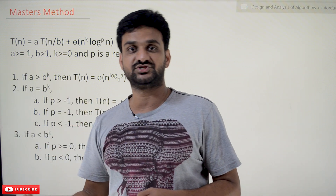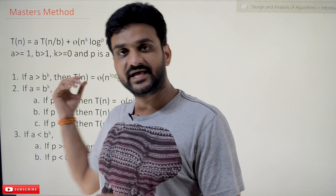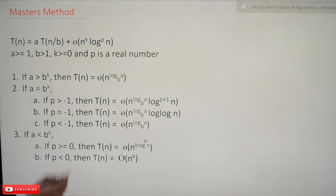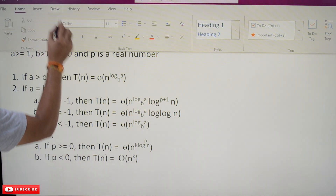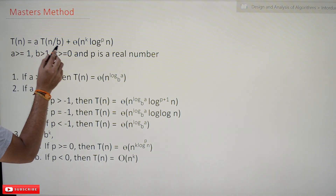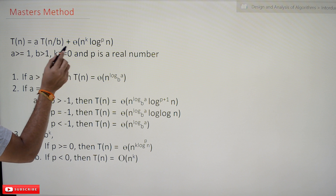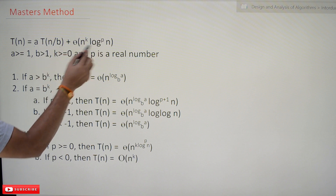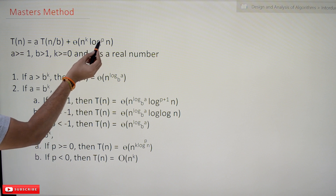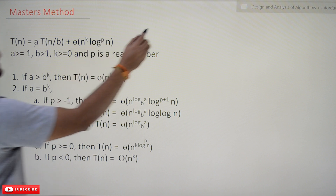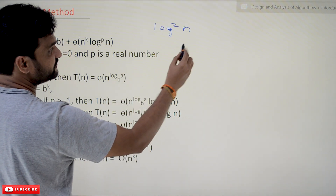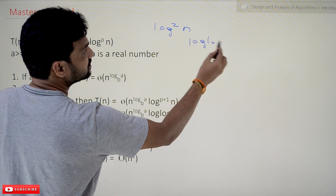Then we can get the efficiency of those recursive algorithms very easily and very directly — no need to do the substitution method. So let's analyze this. If T(n) is equal to a·T(n/b) plus Θ(n^k · log^p(n)), where log^p means it is log to the power p of n.